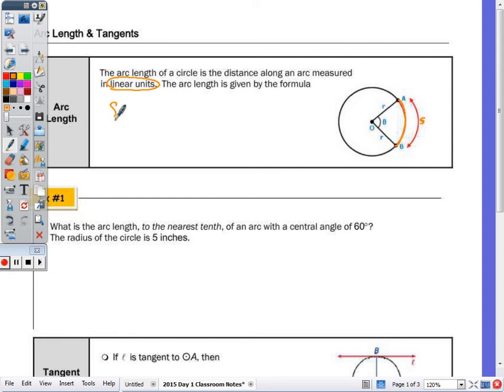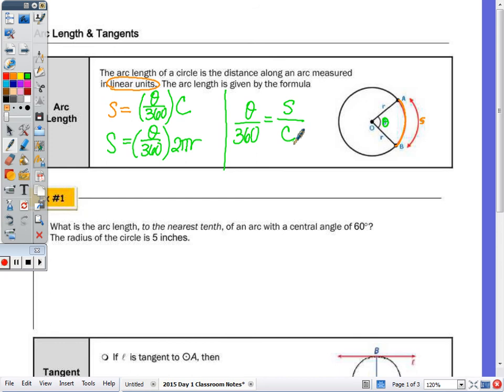Arc length is a fraction of the total circumference. S equals the central angle over 360 times the total circumference. I'll rewrite it with the formula for circumference, which is π times diameter, or 2πr. You could also find arc length using a proportion: the central angle over 360 degrees should equal the arc length over the total circumference.